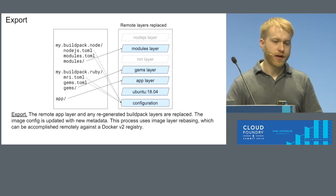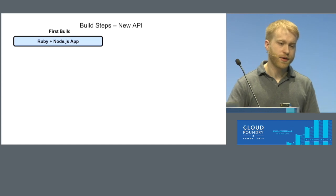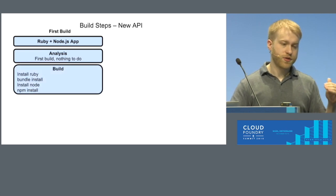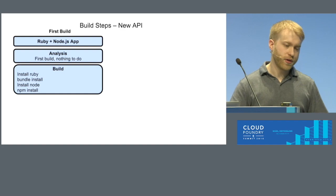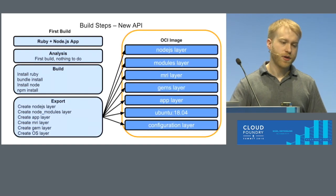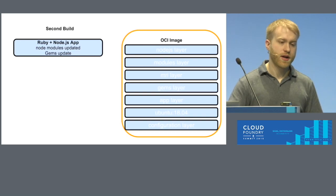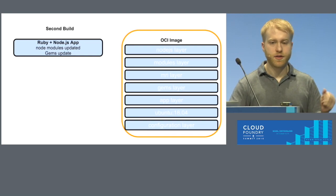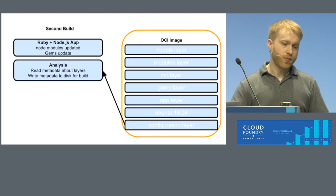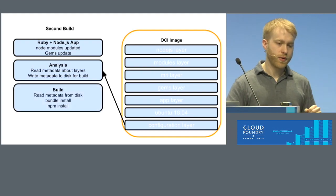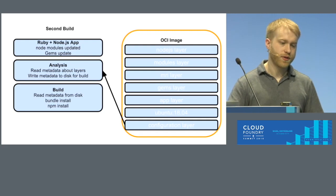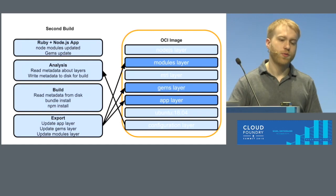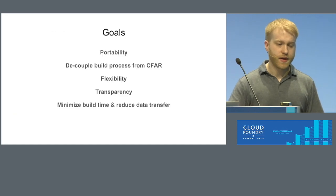So to give you an example — comparing first build and second build. On your first build, analysis doesn't do anything yet because there's no image there. Build generates and downloads Ruby and Node, installs them, installs Node modules, installs Ruby gems, and export uploads all those layers. Then in the second build, if just parts of that are updated — say package.json changes and your Gemfile changes — we read information about the previous layers, decide we're going to rebuild the Node modules and gems, just update those individual layers in the app layer on the registry, and everything else stays where it is and we don't have to regenerate it.